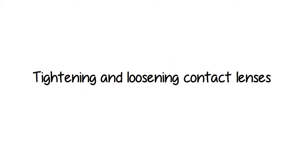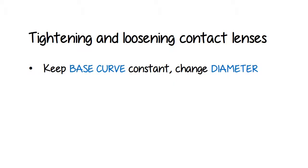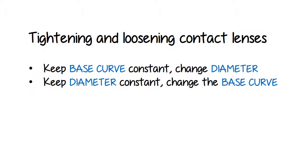There are three ways that you can tighten or loosen contact lenses using the base curve and the diameter. You can keep the base curve constant and change the diameter. You can keep the diameter constant and change the base curve. Or you can do a little bit of both.